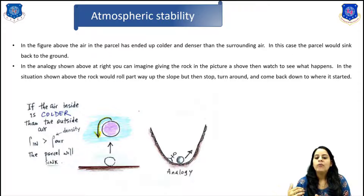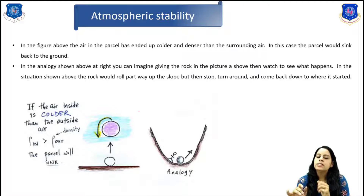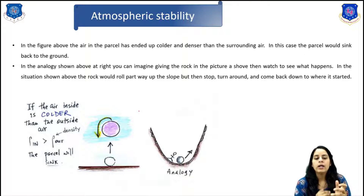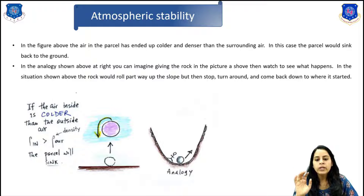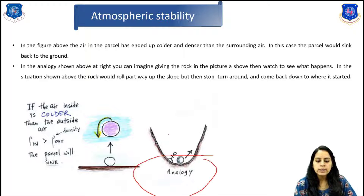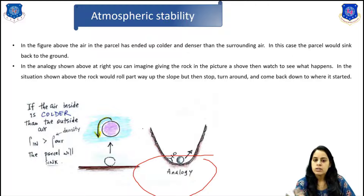In analogy, imagine rolling a rock up a slope — it would roll part way up but then stop and come back down to its original position. Here on screen you can see that if the air inside the parcel is colder than the outside air, the pressure inside is greater than outside and the parcel will sink. The rock comes back down to its original position, representing stable conditions.